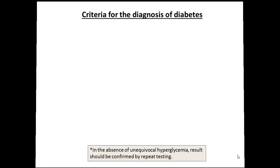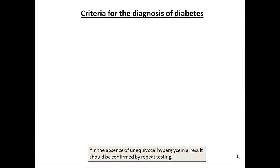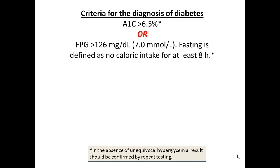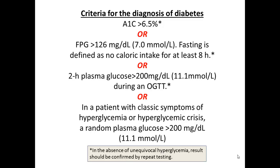Students will be required to know the criteria for the diagnosis of diabetes. The first is an A1c in excess of 6.5%, with signs and symptoms of diabetes. Or a fasting plasma glucose in excess of 126 mg/dL — fasting is defined as no caloric intake for eight hours. Or a two-hour plasma glucose exceeding 200 mg/dL during an oral glucose tolerance test. Or classic symptoms with a random plasma glucose above 200 mg/dL. This test should be repeated, especially if there are no symptoms.